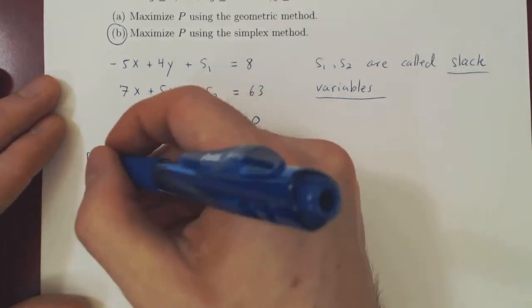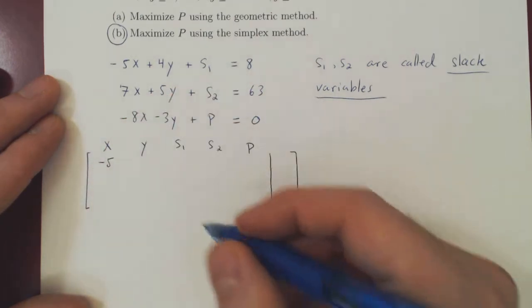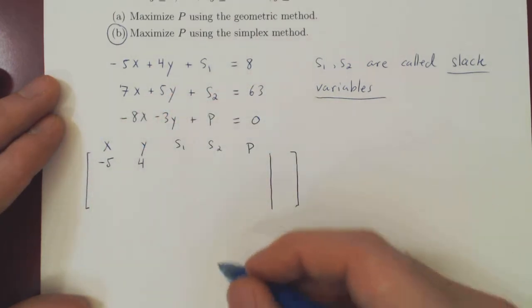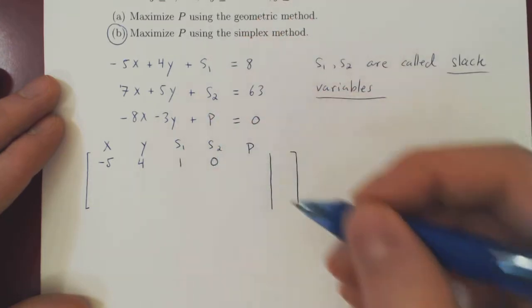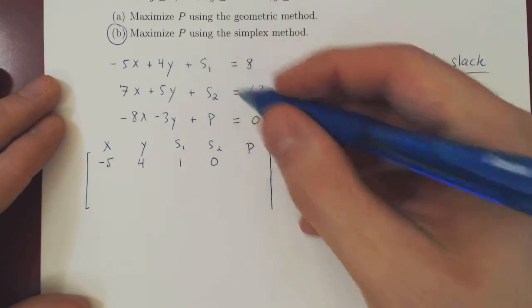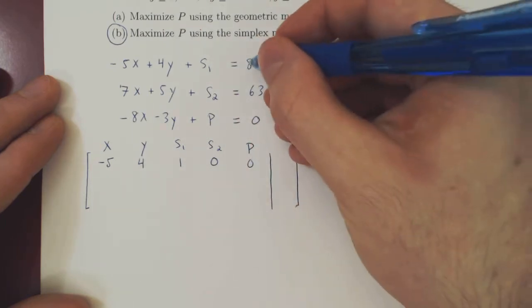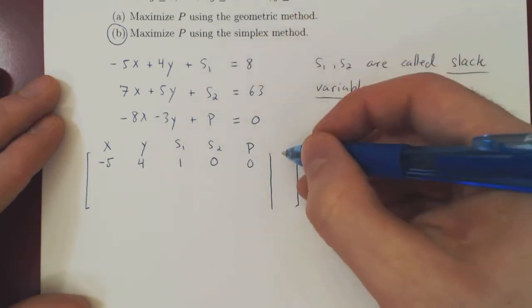So first equation: negative 5 times x, positive 4 times y, plus 1 times s1, there is no s2 in the first equation so it has a coefficient of 0, there is no p, same thing, and the result is equal to positive 8.